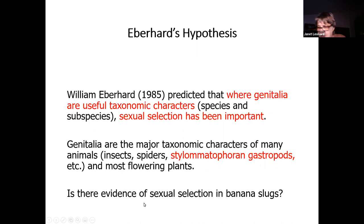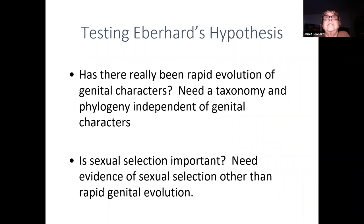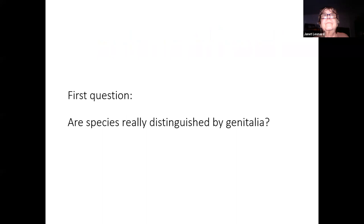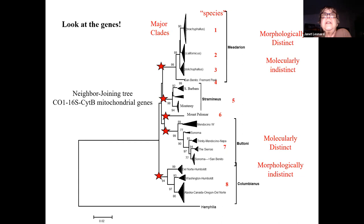So we wanted to ask: is there evidence of sexual selection in banana slugs? To test this hypothesis we needed two stages. First, has there really been rapid evolution of genital characters? To do that, we need a taxonomy and phylogeny — an evolutionary tree — done independently of genital characters. The second question then is whether sexual selection is important — we need to find evidence of sexual selection other than rapid genital evolution. Nowadays when you want to distinguish between species, you go to looking directly at the genes, usually mitochondrial genes. And so we've done that with our banana slugs.